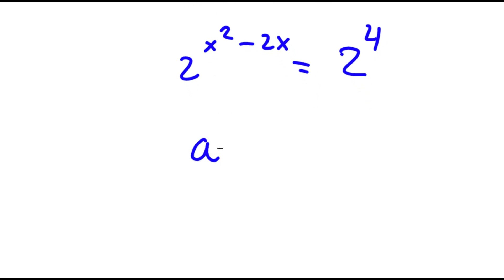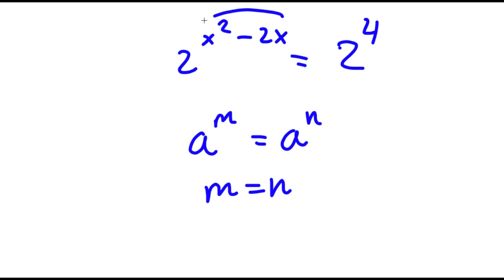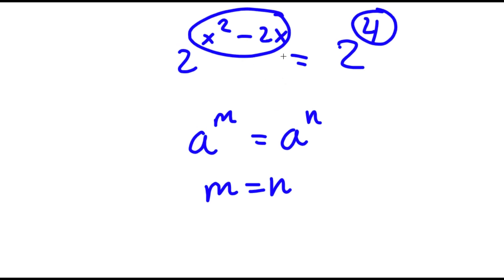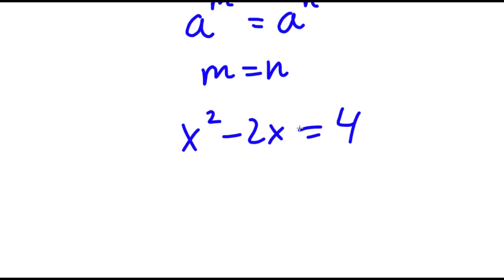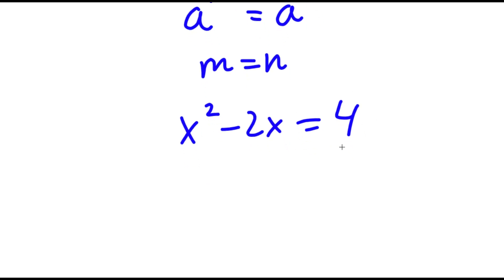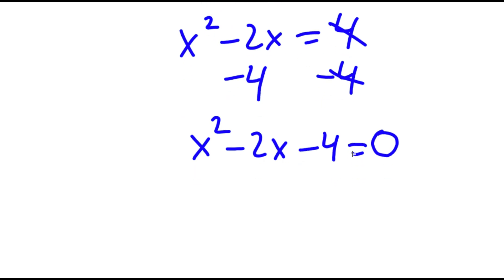Now if I have something in the form a to the power of m equals a to the power of n, this means that m is equal to n. So in this case x squared minus 2x equals 4. To solve this I'm going to subtract 4 on both sides, so now I have x squared minus 2x minus 4 is equal to 0.